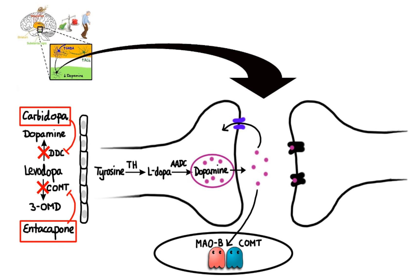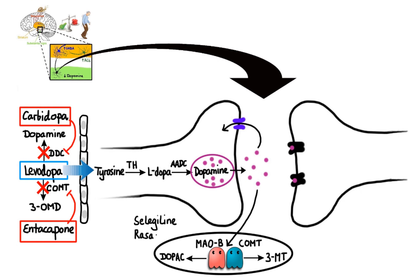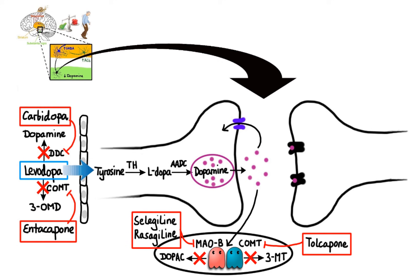Levodopa is carried across the blood-brain barrier by an amino acid transporter. Once inside the brain, levodopa is efficiently converted to dopamine, supplementing depleted dopamine levels in the midbrain. However, dopamine is also susceptible to breakdown by COMT and MAO-B, which convert dopamine to 3-methoxytyramine and 3,4-dihydroxyphenylacetic acid respectively. Selegiline and rasagiline selectively inhibit MAO-B, and tolcapone inhibits COMT. In contrast to entacapone, tolcapone can better penetrate the blood-brain barrier and thus can act both centrally and peripherally. By decreasing dopamine metabolism, these drugs help increase dopamine levels in the brain.